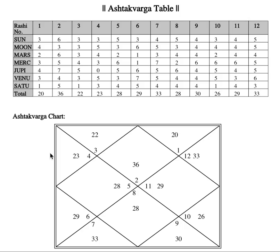So as usual, this is a Taurus ascendant — number two is in the first house — and therefore we can directly go to the number two sign here. These numbers you are seeing are the signs, not houses. Number two means Taurus. Here you see a total of 36 points, and there are again 36 points here — one Aries has 20 here and another Aries has 20 here.